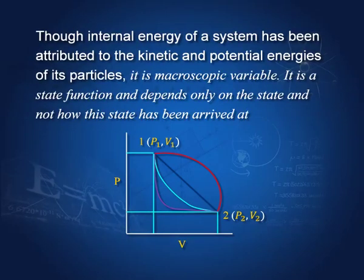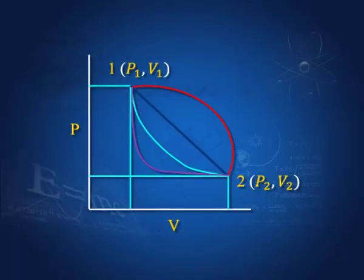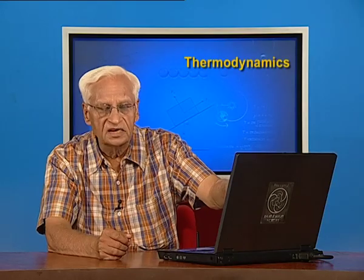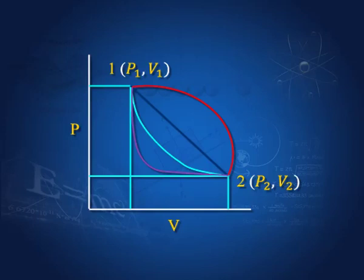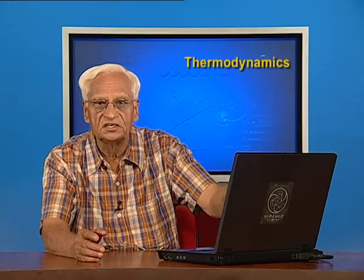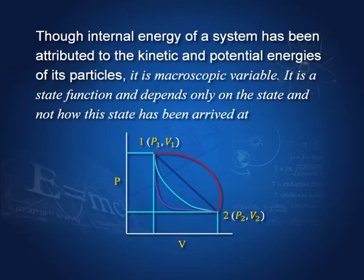Though internal energy has been attributed to the kinetic and potential energy of its particles, it is a macroscopic variable. In fact, it is a state function and depends only on the state of the system — it does not matter how that state has been arrived at. In this figure, suppose I talk of state one which has bulk properties of p1 and v1. The internal energy would depend only on the state, not on which path was taken to arrive at this state. It does not matter how the system has arrived at that state.